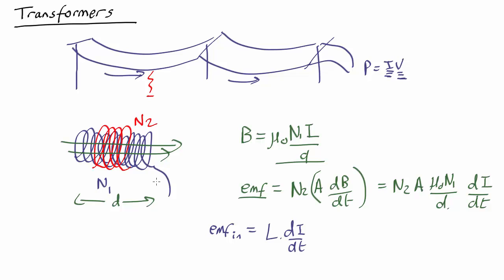L is the self-inductance of the first coil. Now we know that L is given by mu0 N1 squared over D times A, dI by dt.